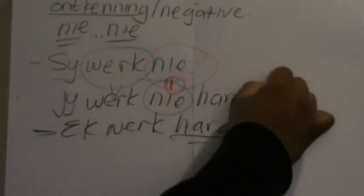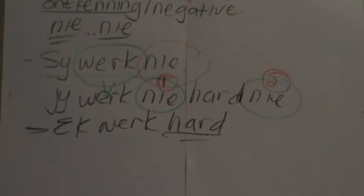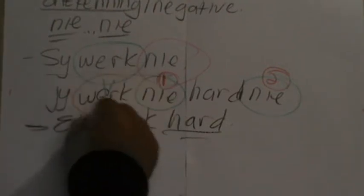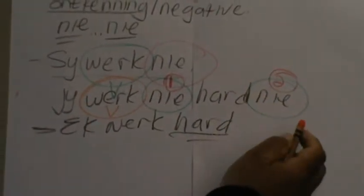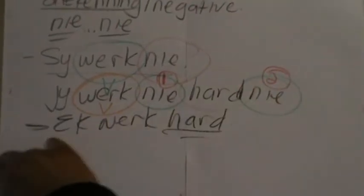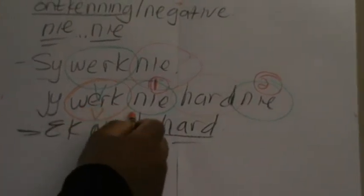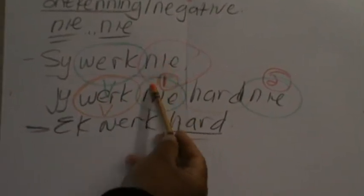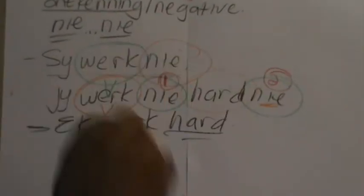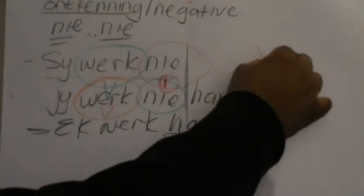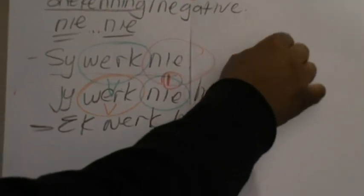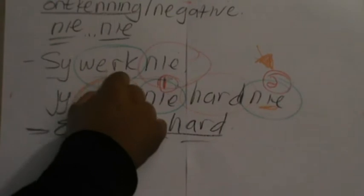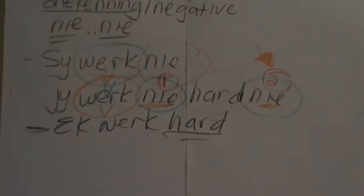One nie in that position, and the second nie in that position. In the sentence, we are looking for our verbs. 'Werk' is our verb in this sentence — 'werk' is the verb. And then 'hard' is something like a describing word. So 'werk' is our verb — the first nie comes directly after our first verb. The second nie goes directly to the end of that sentence. There must always be two. The second nie goes directly to the end of the sentence.